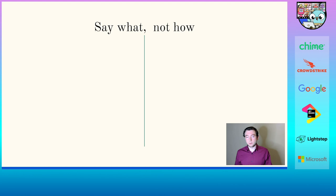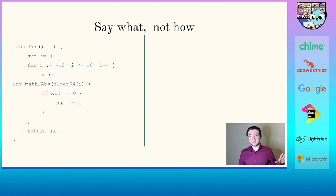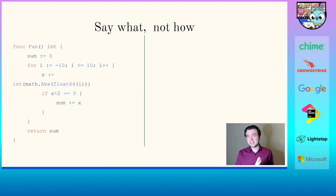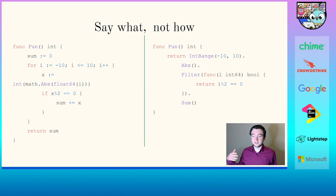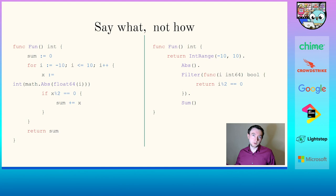We're going to say what we want but not how we want it. On the left-hand side we have a program in a more traditional Go style: a sum variable iterating from minus 10 to 10, taking the absolute value, and if it's even, adding it to the sum. If we write this in a more declarative way, we get something like the right-hand side: give me an int range of minus 10 to 10, give me the absolute value for each number, filter by even numbers, then give me the sum. The right-hand side is valid Go written using a functional programming library.